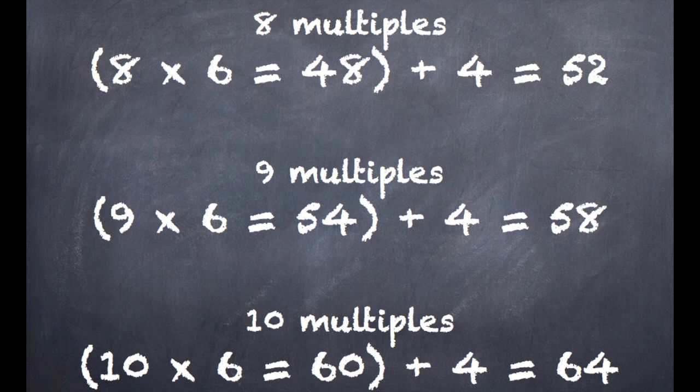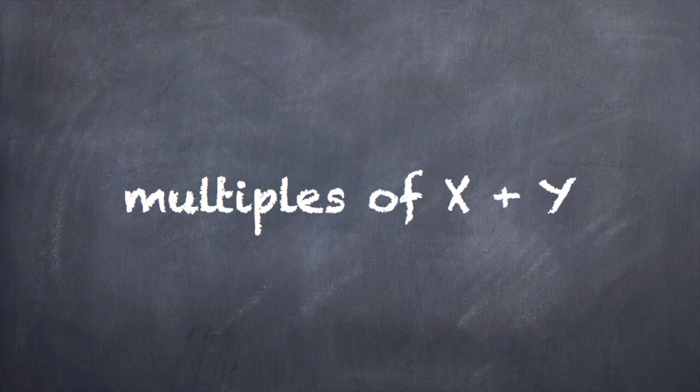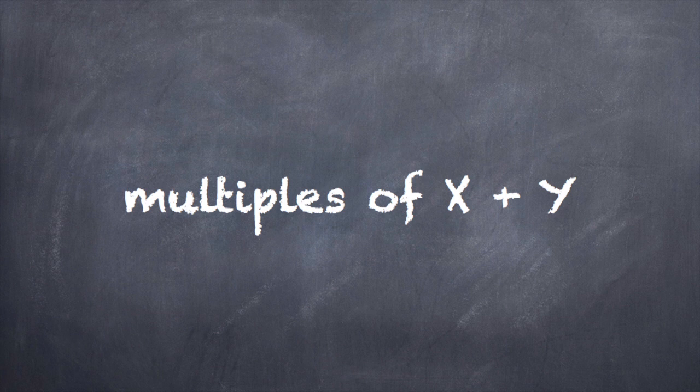So now you know what the pattern means when it says that you'll need to cast on in multiples of X plus Y. Your X is the multiples of stitches in the stitch repeat, and the Y is the stitches you'll add on to the end to make it even.